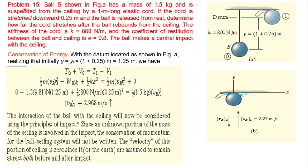Numerical problem: Ball B has a mass of 1.5 kg and is suspended from the ceiling by a 1-meter long elastic cord. The cord is stretched down 0.25 meter from its natural length. We need to find the stressed position — the cord length is 1 meter natural length, and the stress position gives us the total stretched configuration.